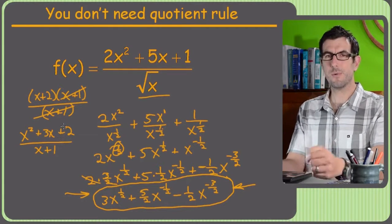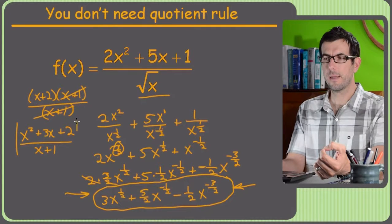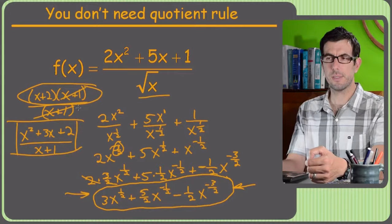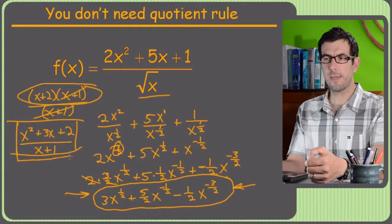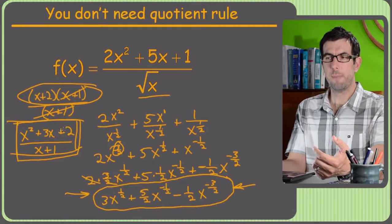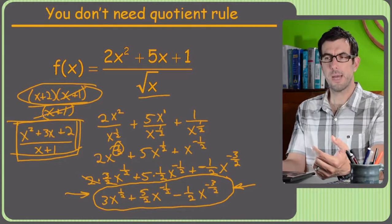But this problem right here is the exact same thing as this. I just foiled out the top first, so if you ran into this thing down here, it sure looks like a quotient rule again, but you might be looking at the top saying, huh, that might factor to have an x plus 1 in it.